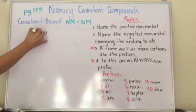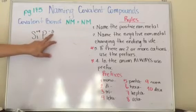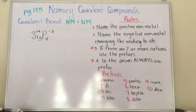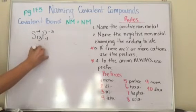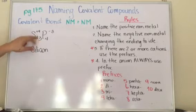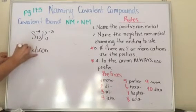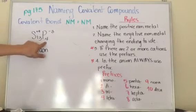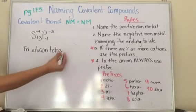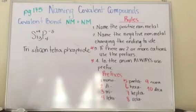Let's try this one. Silicon has a charge of plus four and phosphorus has a charge of negative three. Can I make this four into a three or this three into a four? No. So we go to a common denominator — I'm going to put a three here and a four here. First, I'm going to name the positive non-metal, which is silicon. My rule tells me that if I have two or more cations, use the prefixes. Here I have three, so I need to use them. So it's going to be trisilicon. For phosphorus — tetra — phosphorus, I need to change the ending to -ide, so it's phosphide. Trisilicon tetraphosphide.